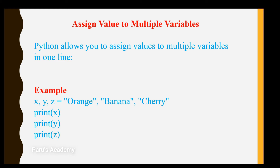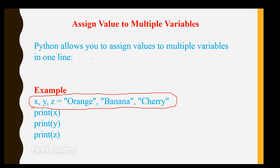Hi students, welcome to Powerhouse Academy. Today in this class we are going to learn how to assign values to multiple variables. We can assign a value to a single variable like this: x equal to 10. But if you want to assign a value to multiple variables, that is also possible in Python.